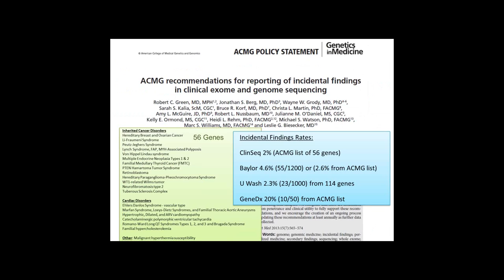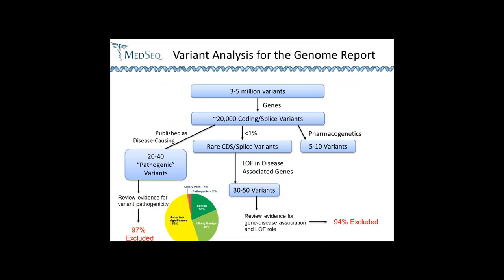One of the biggest challenges we encounter is interpretation of particularly rare variants. Many of you know there are ACMG recommendations listing 56 genes to return, which has led to groups examining the rate of incidental findings in cohorts — rates vary across studies, but many are around the 1 to 2 percent range for those 56 genes. Differences arise from how we all interpret variants. When we interpret variants in a genome, we routinely find many putative pathogenic variants, 97 percent of which we exclude for lack of evidence, and loss-of-function variants, 94 percent of which we exclude due to insufficient evidence for a gene-disease association. This presents huge challenges in the interpretive process — it is very labor-intensive.